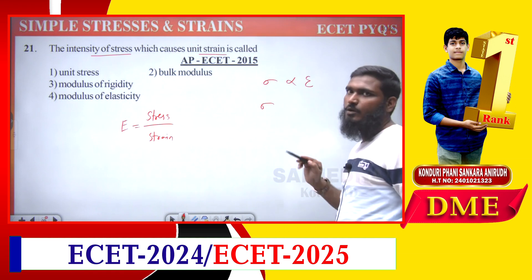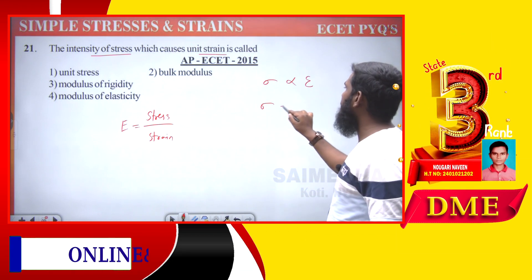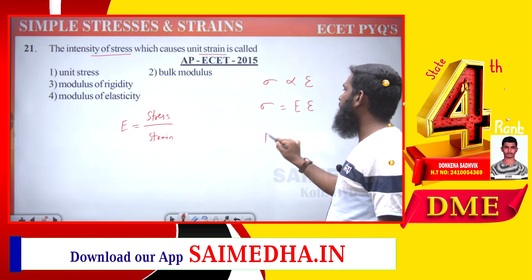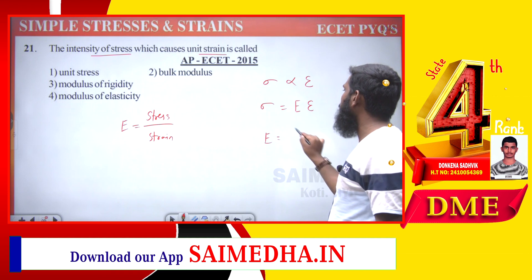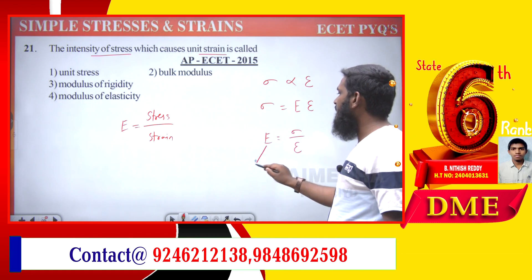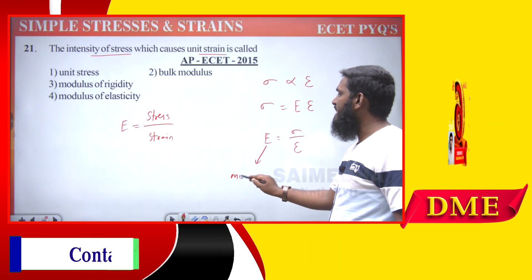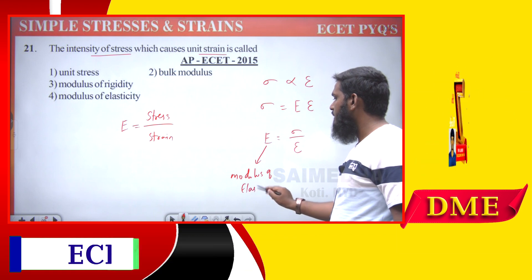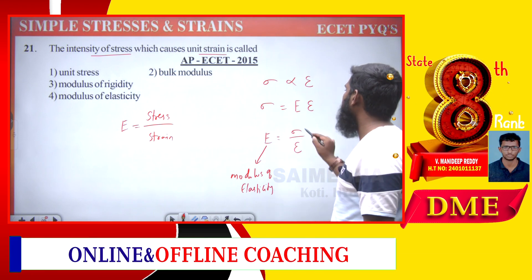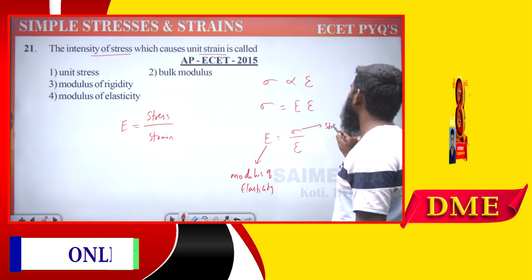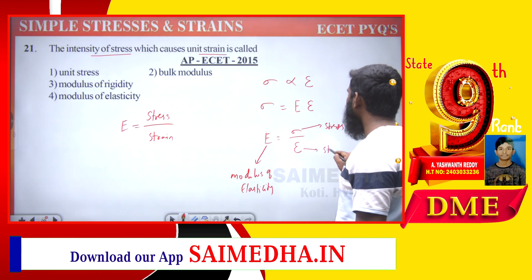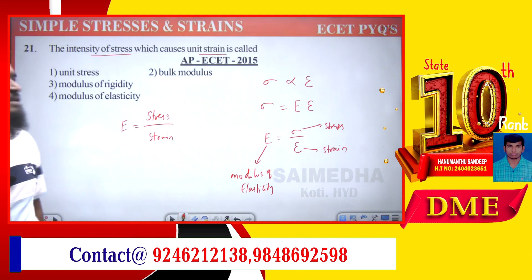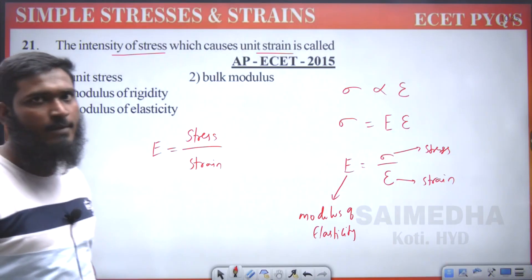To remove the proportional symbol, we introduce an elastic constant E. So capital E equals sigma divided by epsilon — where E is modulus of elasticity, sigma is stress, and epsilon is strain. Whenever we have stress divided by strain, we call it modulus of elasticity.